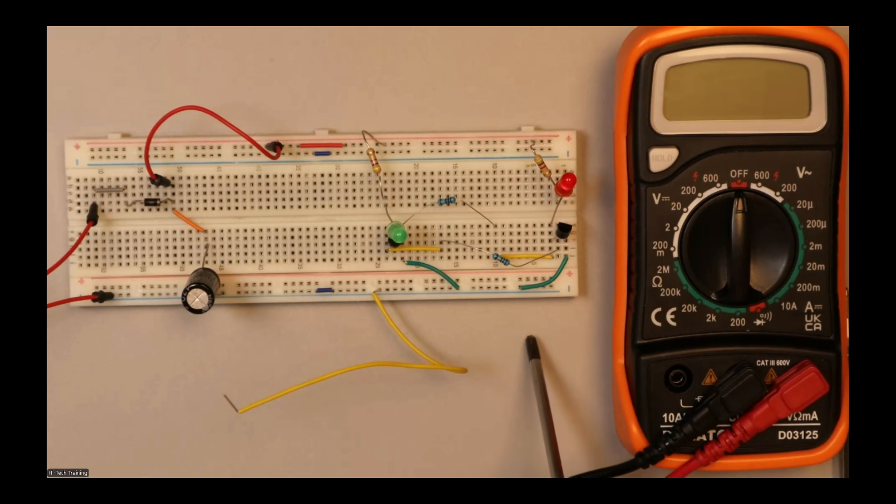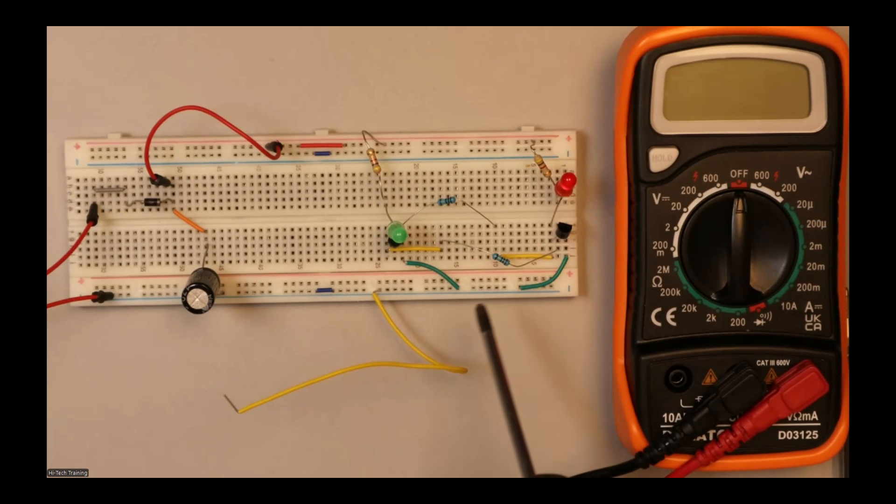So all these terms, AC and DC and smoothing and diodes, all that is explained in the electronics course. And you actually build the circuits like this and look at the components and test them using meters like this here.